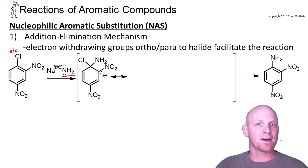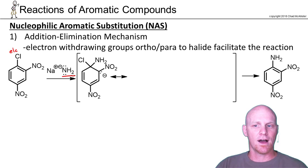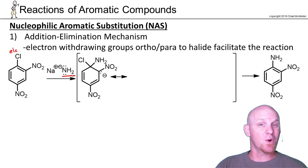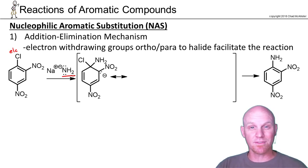You'll see amide ions, hydroxide ions, and alkoxide ions like methoxide are by far the most common nucleophiles used. Sometimes you'll see it done with just plain old ammonia — it does work, though it's not the most preferred.